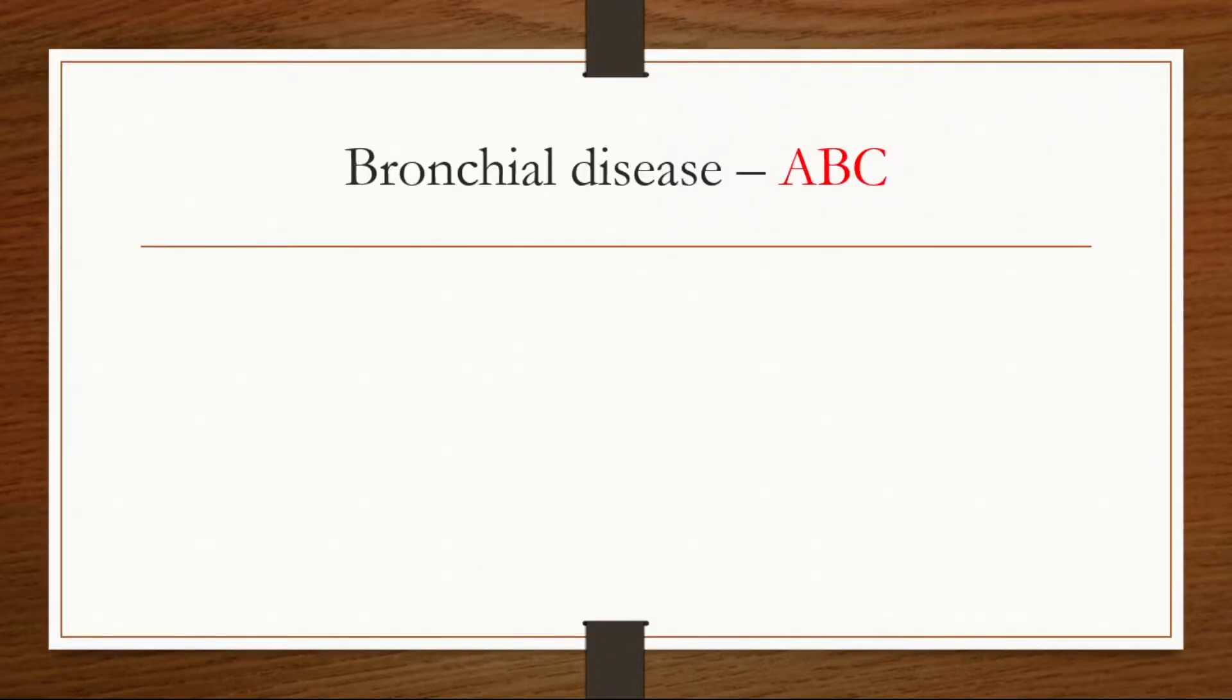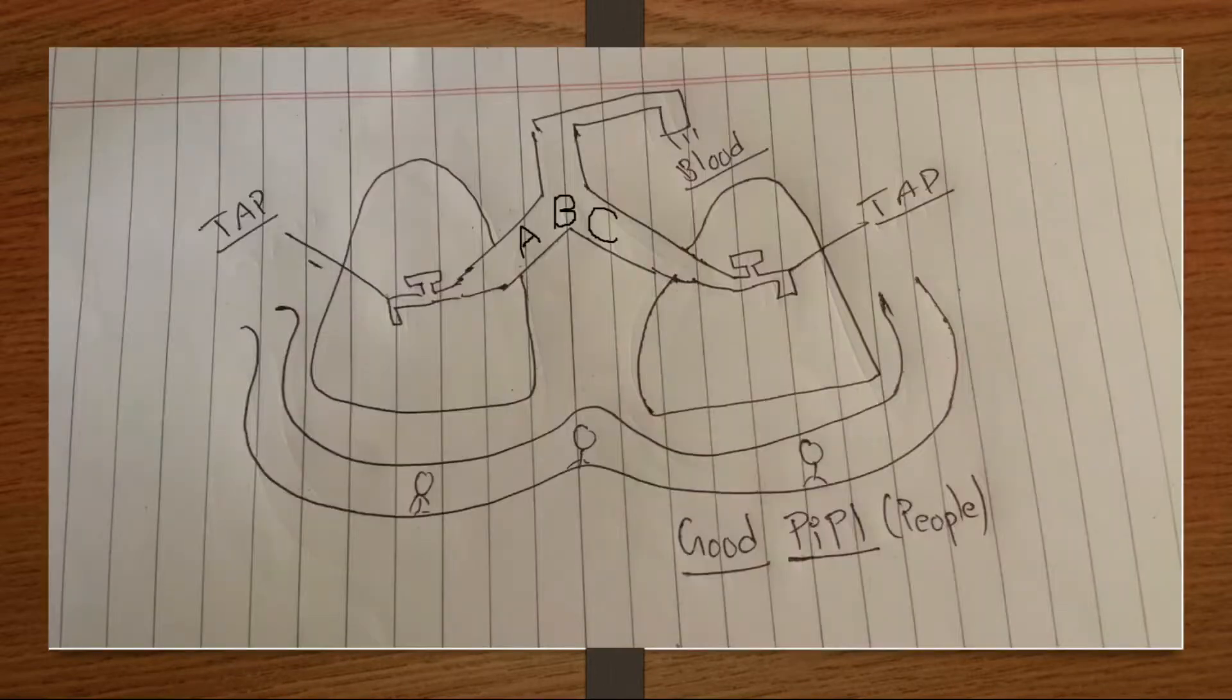Okay, ABC: A for acute bronchitis, B for bronchial carcinoma, and C for cancer related to bronchus. And in the lungs, as you can see here, I've drawn two taps. Okay, not only one but two taps.